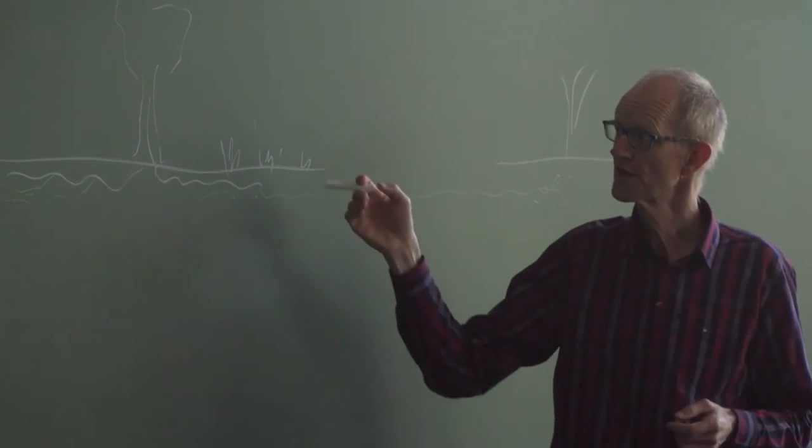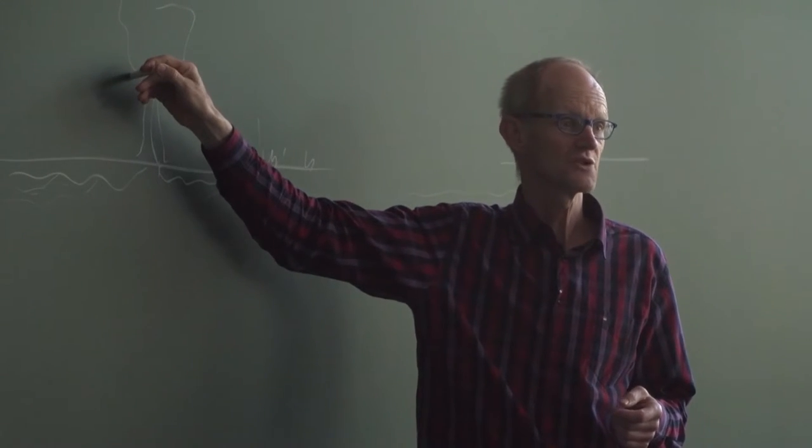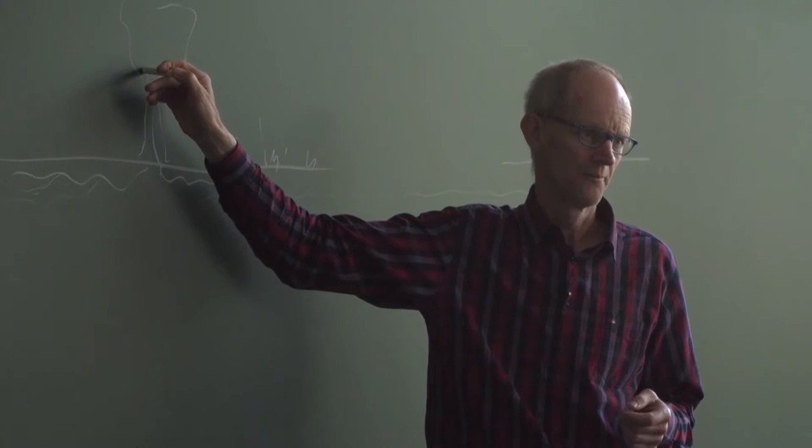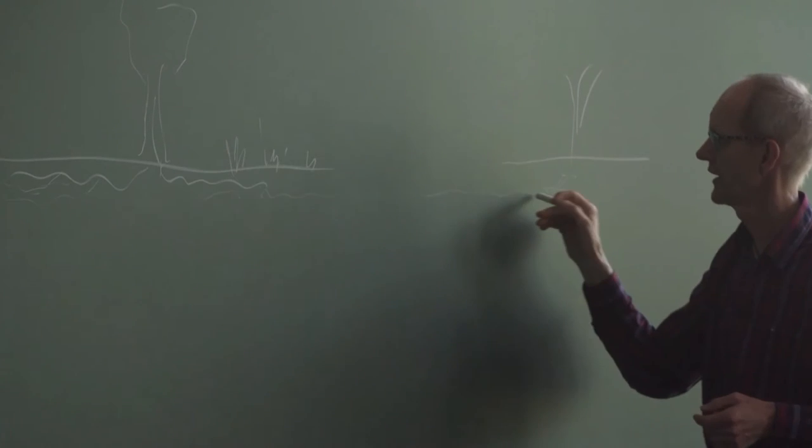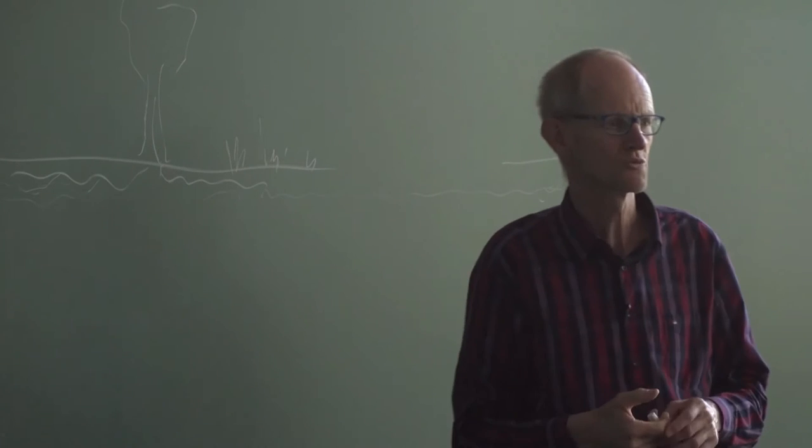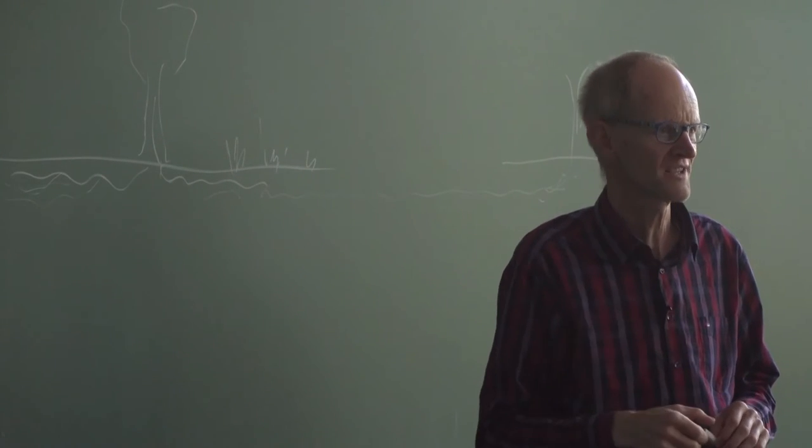If there is an animal grazing this tree, this tree can send a signal through the mycorrhiza fungi: take care, bring out your bitter stuff so that you don't taste well anymore, so that you are not grazed down.